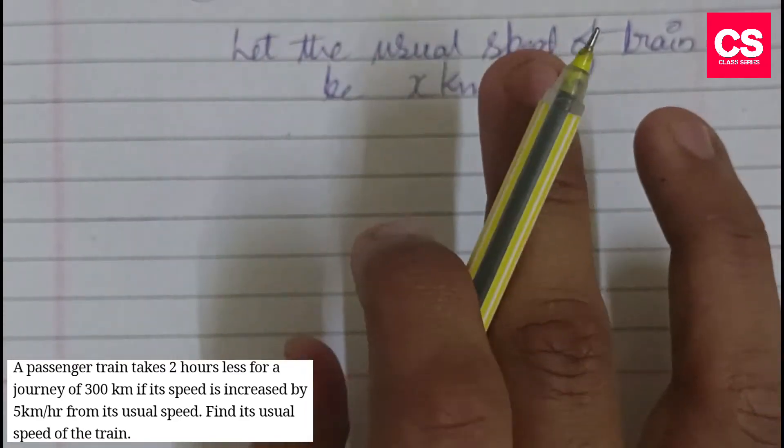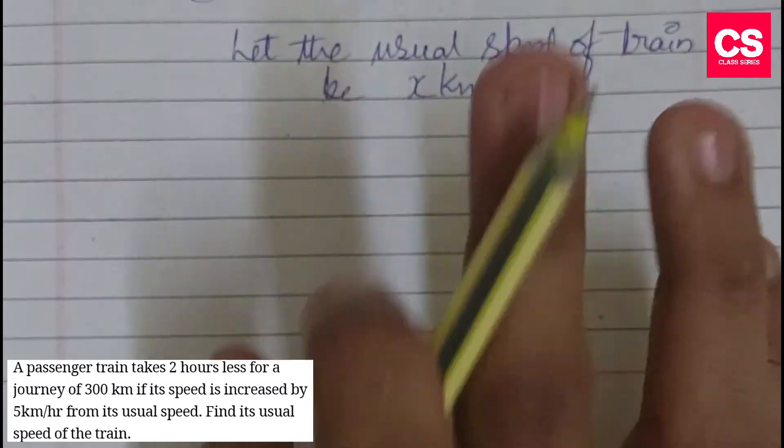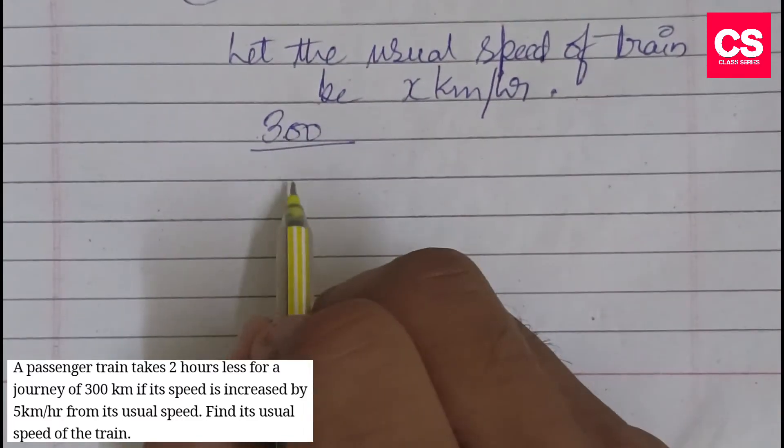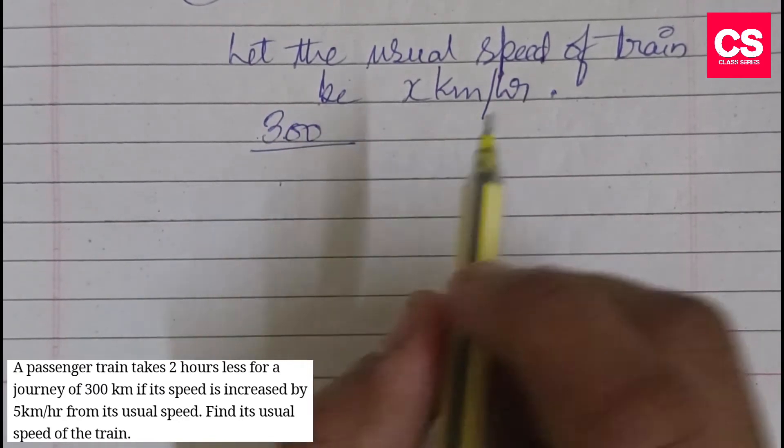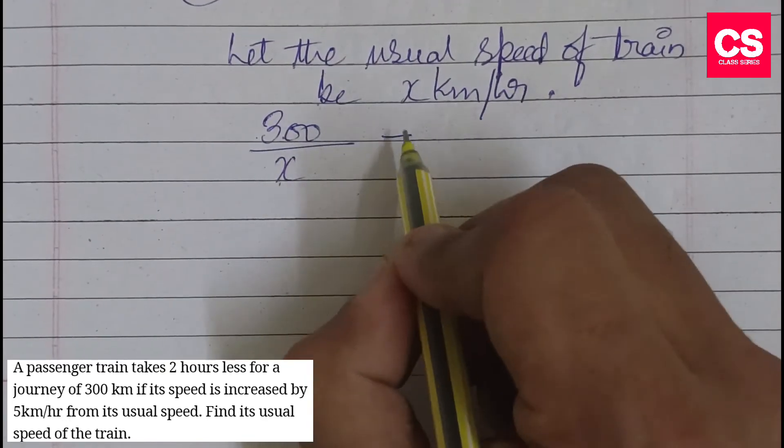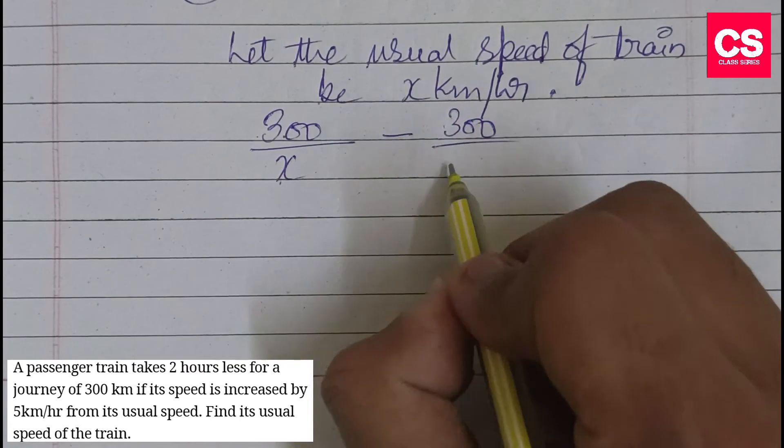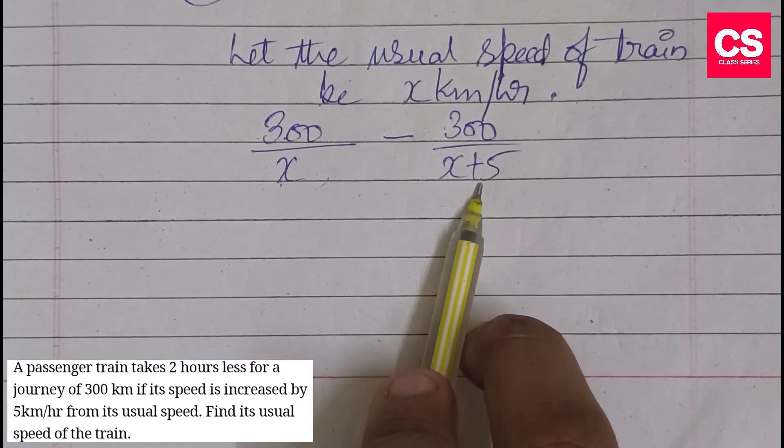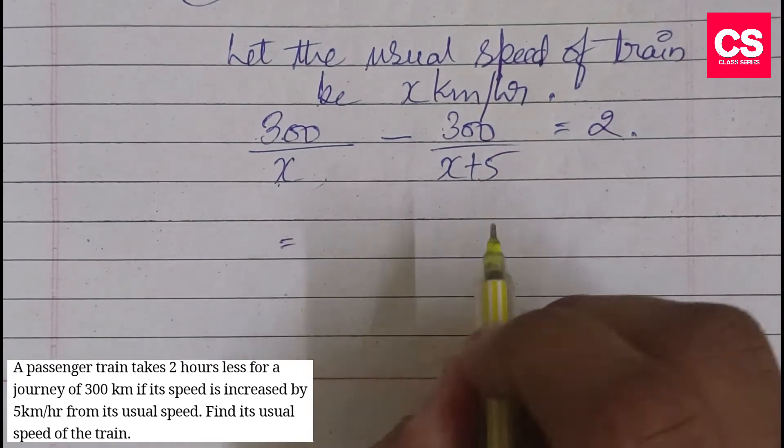The train takes 2 hours less for a journey of 300 km if its speed is increased by 5 km per hour from its usual speed. So the time at usual speed is 300/x, and at increased speed is 300/(x+5). The difference is 2 hours.